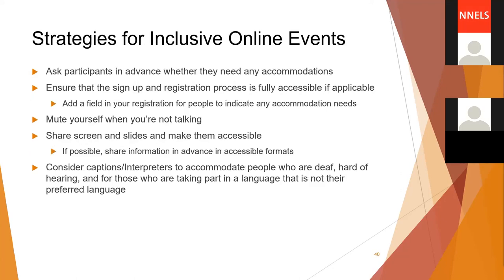For strategies for inclusive online events: ask participants in advance whether they need any accommodations. Ensure that the sign-up and registration process is fully accessible, and add an optional field in your registration for people to indicate accommodation needs. Mute yourself when you're not talking. Share screen and slides and make them accessible. If possible, share information in advance in accessible formats. Consider captions and interpreters to accommodate people who are deaf or hard of hearing, and for those taking part in a language that is not their preferred language.